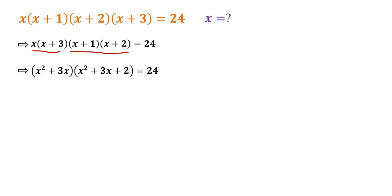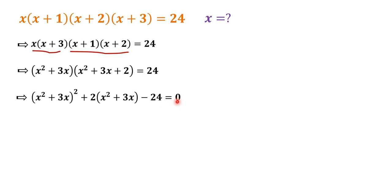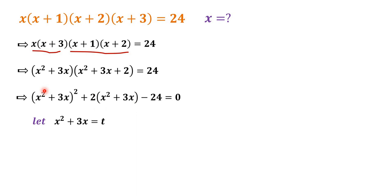Then we have x squared plus 3x squared plus 2 times x squared plus 3x minus 24 is equal to 0. Look at this equation — we have x squared plus 3x here and x squared plus 3x here, so we can do a substitution. Let x squared plus 3x equal t. Then we can convert this equation into a quadratic equation in t.